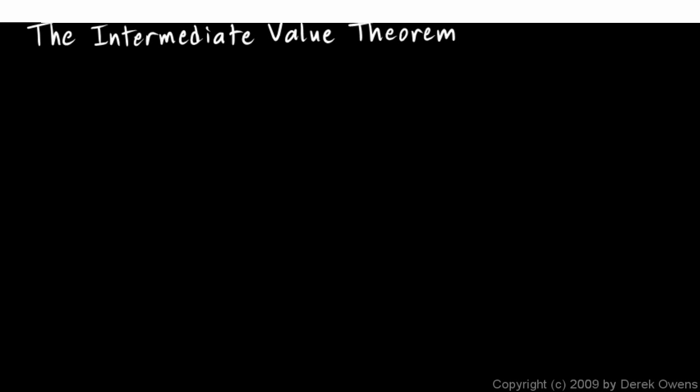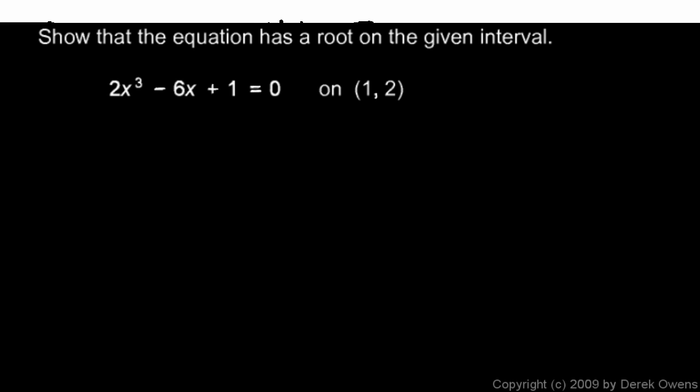We're still talking about the intermediate value theorem, and in this section we're going to look at some more examples. All of these examples deal with finding roots for equations, or finding solutions for equations. Here's the first one: show that the equation has a root on the given interval. The equation is 2x cubed minus 6x plus 1 equals 0, on the interval 1, 2.